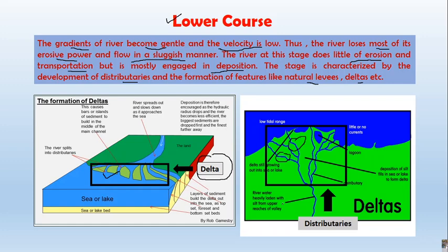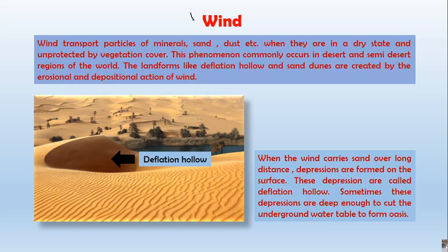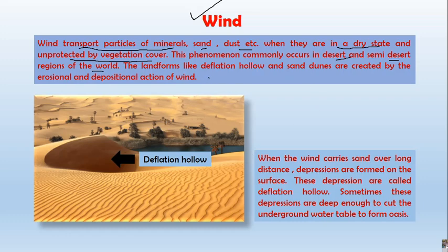The next agent of denudation is wind. Wind actions are more prominent in desert and semi-desert regions because wind transports particles of minerals, sand, and dust when they are dry and unprotected by vegetation cover. Both conditions — dry state and very little vegetation cover — are available in deserts. Landforms like deflation hollows and sand dunes are created by the erosional and depositional action of wind.